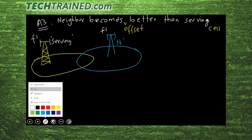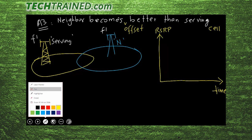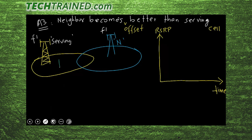On the right side I'm going to draw a graph. On the x-axis we have time and on the y-axis we have the measurement. In this case we are triggering the event based on RSRP — the Reference Signal Received Power.